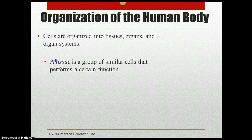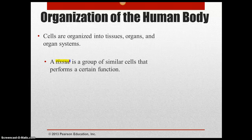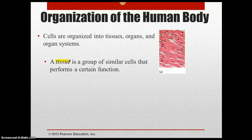A tissue is a group of similar cells that performs a certain function. We have four main types of tissues in our body. The first is epithelial, like our skin. Second is connective tissue, like our bone, cartilage, and blood. The third type is muscle tissue, which we find in our skeletal, digestive, and cardiac systems. And the fourth kind is nervous tissue, which is found in the brain, spinal cord, and nerves.